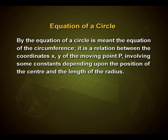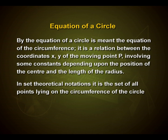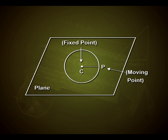It is a relation between the coordinates x, y of the moving point P involving some constants depending upon the position of the center and the length of the radius. In set theoretical notations, it is the set of all points lying on the circumference of the circle. We can see the circle here with center C and P is the moving point.